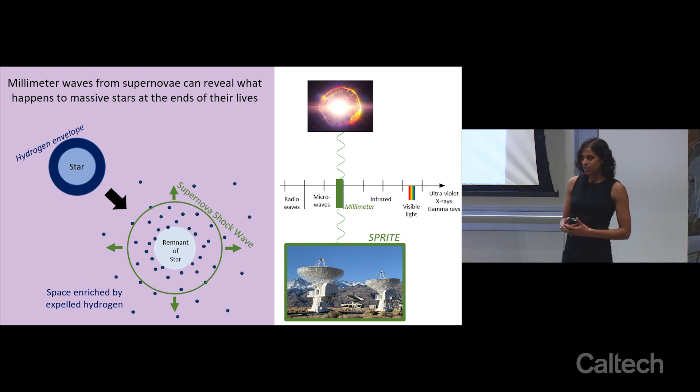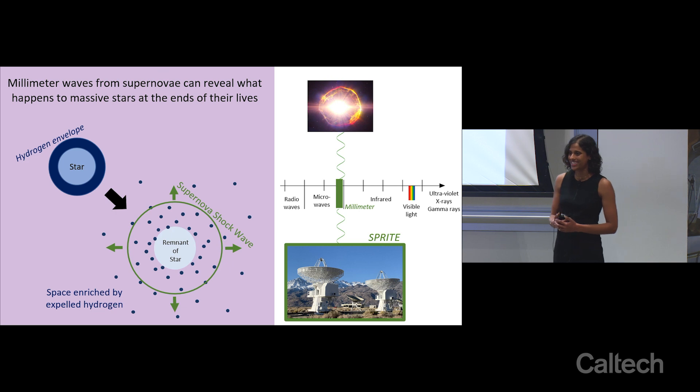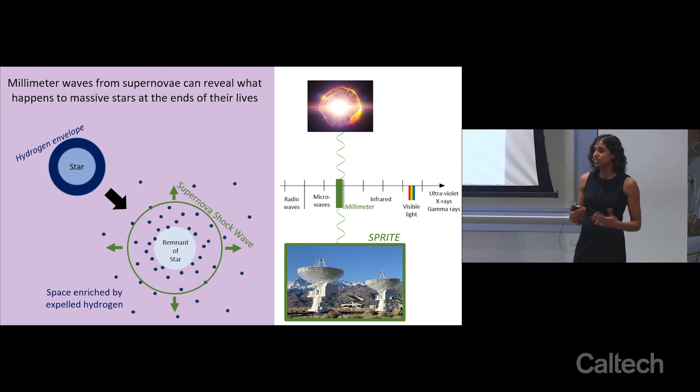Then, the supernova explosion that follows will generate a powerful shockwave that moves through and interacts with this material. This interaction is what produces millimeter waves, a key clue to cracking our case. The brightness of the millimeter waves can tell us about how much material was expelled. The pattern can tell us how it was expelled. Was it slow and continuous, or in many big bursts?